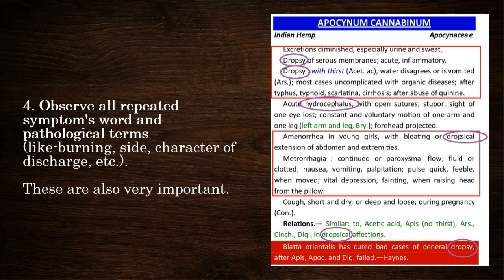Fourth, observe all repeated symptom words and pathological terms like burning, site, character of discharge, etc. These are also very important. For example, dropsy has been repeated many times with similar pathology — hydrocephalus — in Apocyanum Cannabinum.